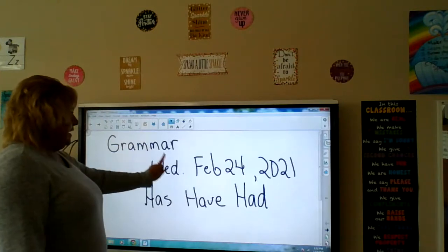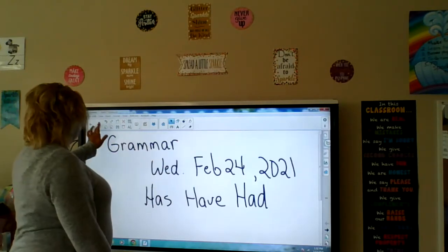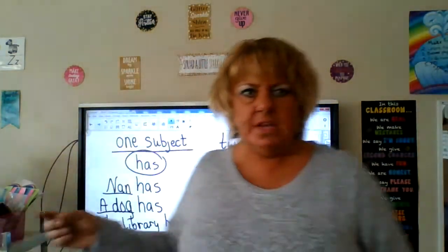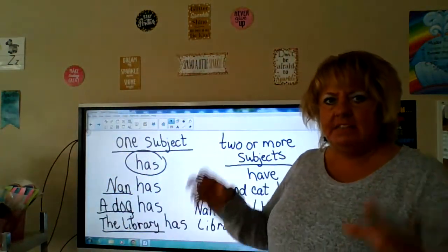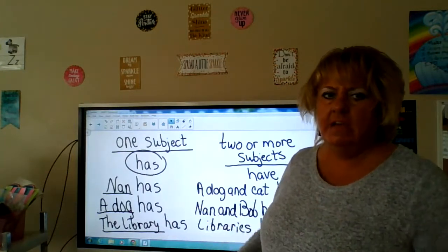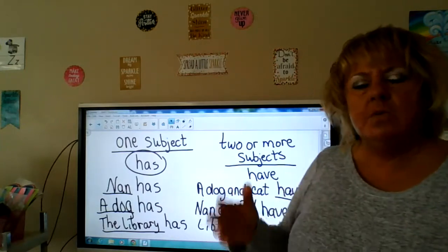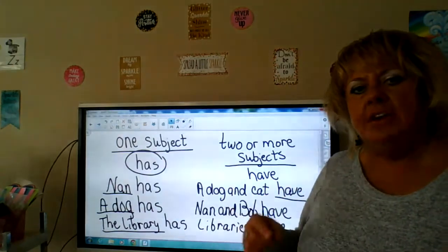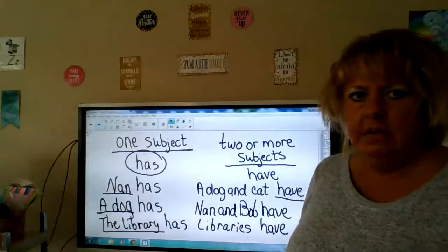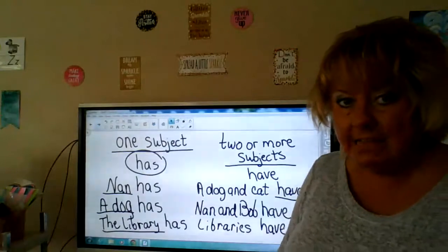So this is Wednesday, February 24th, 2021 — has, have, had. If it's one subject, we use has. That means it's happening right now. Right now, Nan has. Right now, a dog has. We can finish the sentence. Right now, the library has books or people in it. So if it's one subject, we use has for present tense.